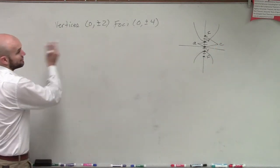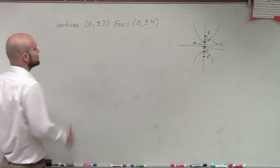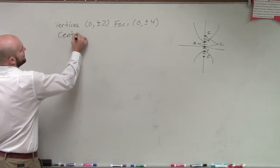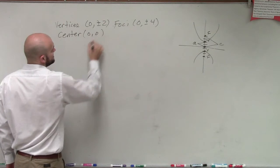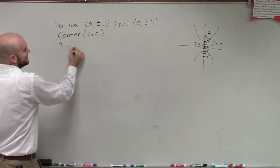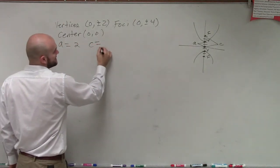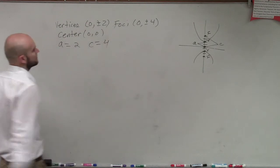So we can say in this corner, and we also notice that the center is at the origin. So we say the center is at (0, 0), a is equal to 2, and c is equal to 4, right?